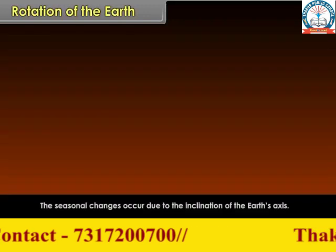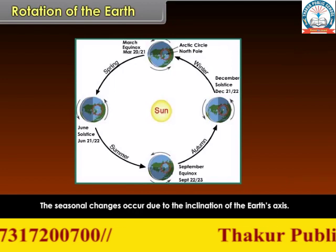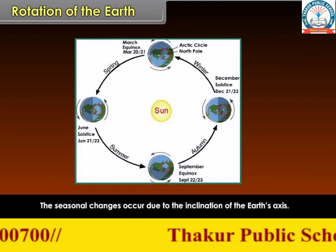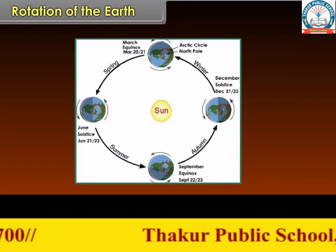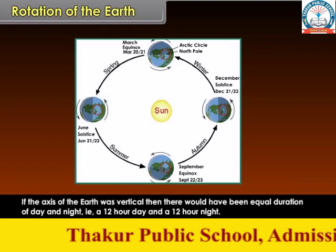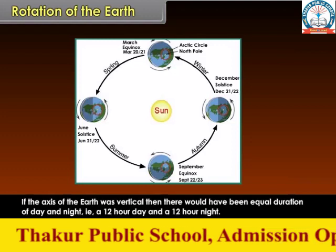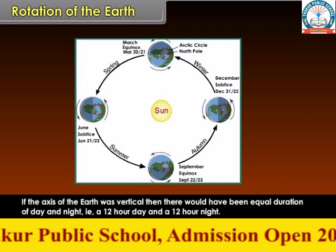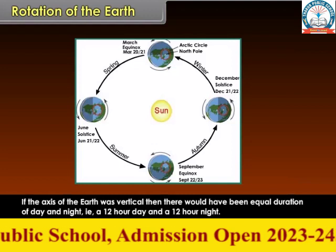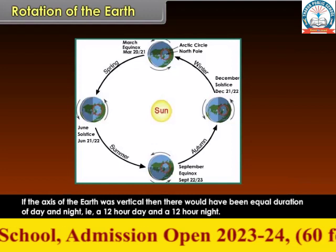The seasonal changes occur due to the inclination of the earth's axis. If the axis of the earth was vertical, then there would have been equal duration of day and night — that is, a 12-hour day and a 12-hour night.